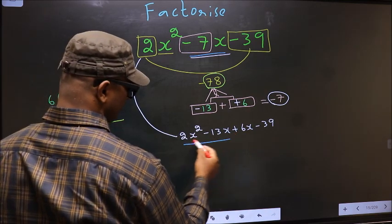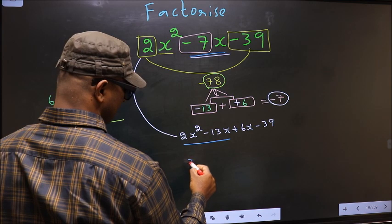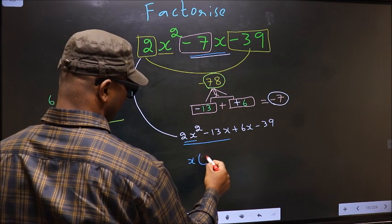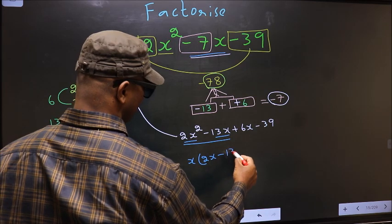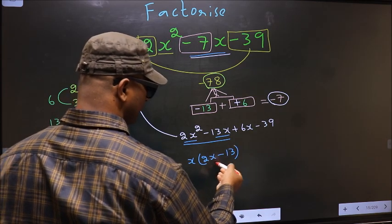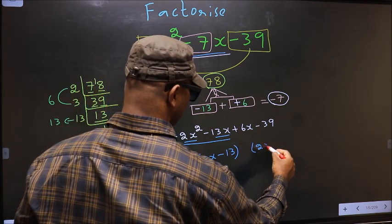From these two terms what can be taken out common? x. So here we get x(2x-13). Now whatever we got here, here also we should get the same thing.